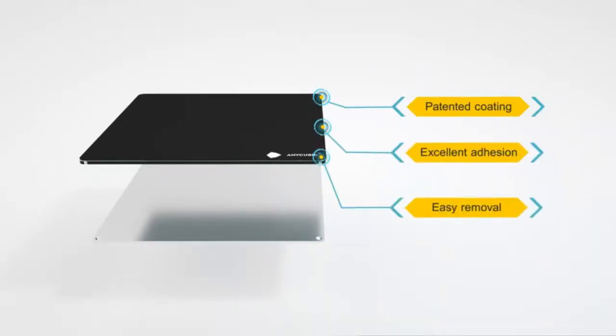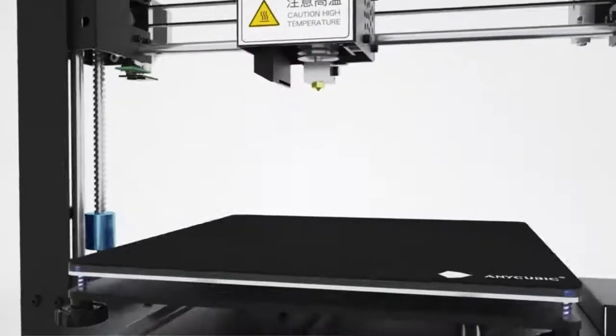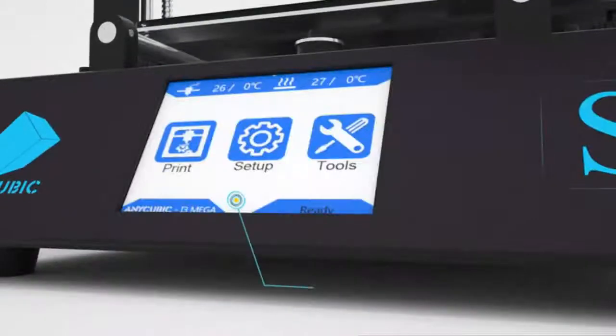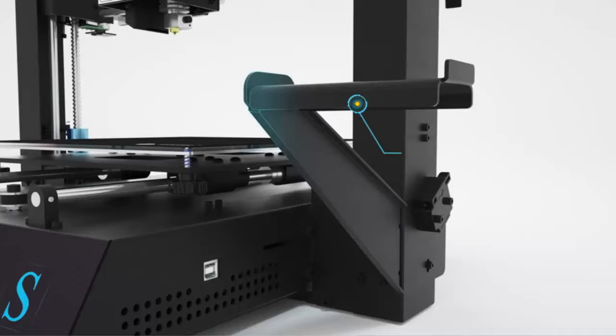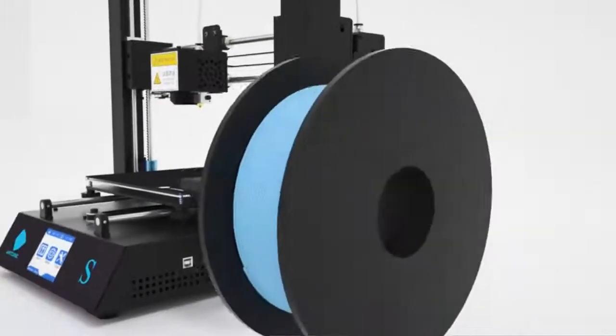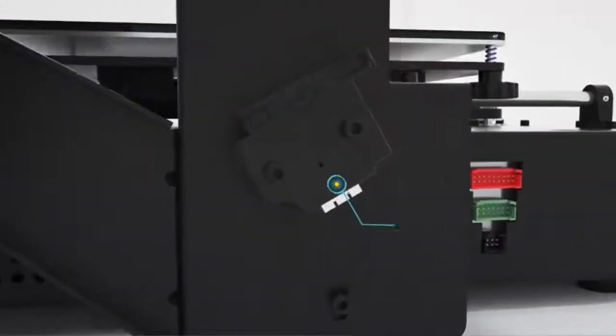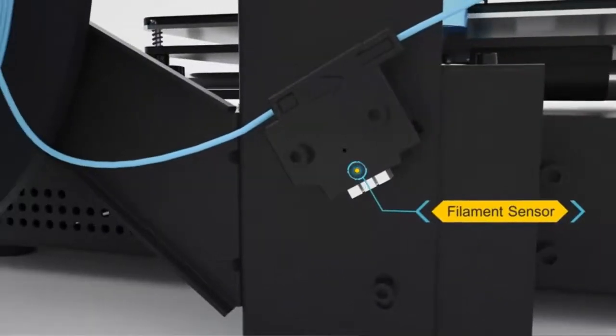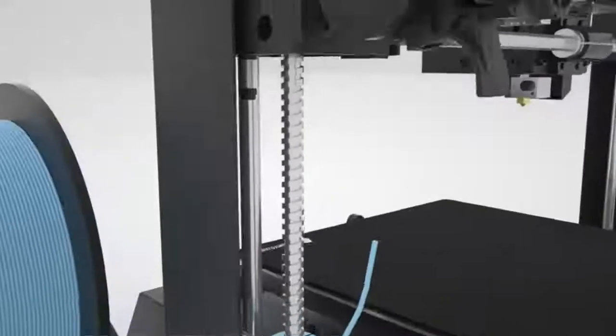Upgraded extruder design. Titan Extruder provides precise extrusion for your 3D printing, with solid filament drive and overall mechanical design, compatible with most filaments, greatly reducing the clogging risk and improving printing accuracy. Works with 1.75mm 3D printer filaments such as TPU, PLA, ABS, hips, wood, etc.